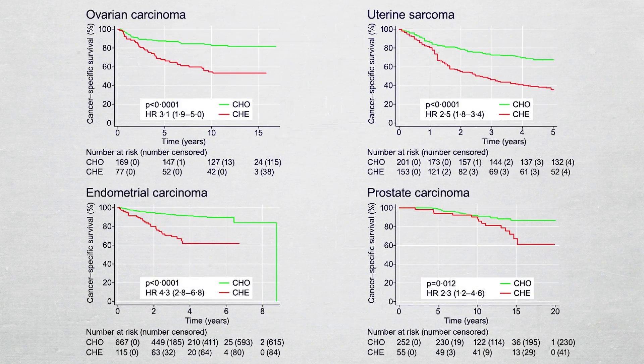Nucleotyping predicted cancer specific survival also in the analysis of ovarian cancer, endometrial cancer, uterine sarcoma, and prostate cancer.